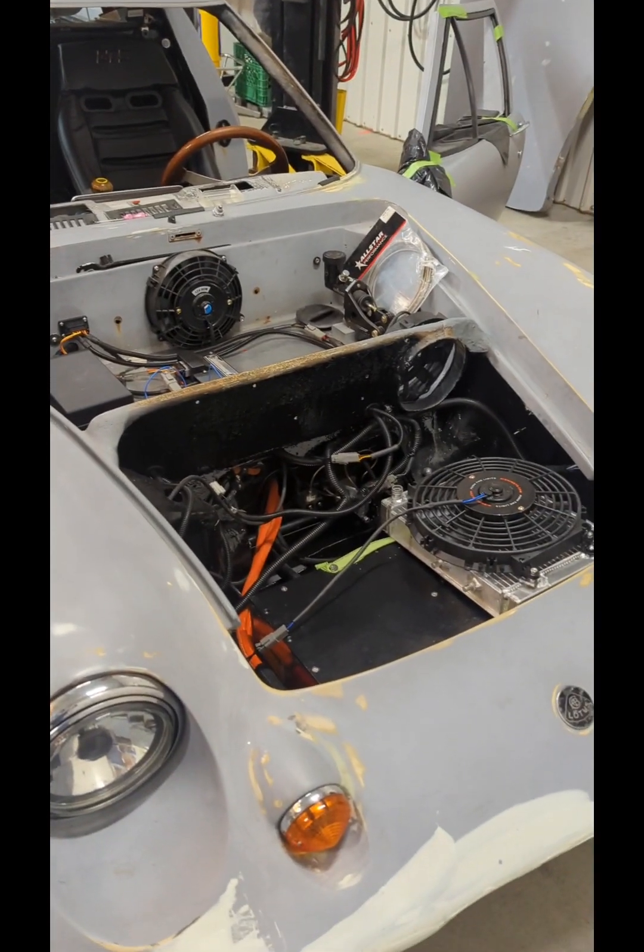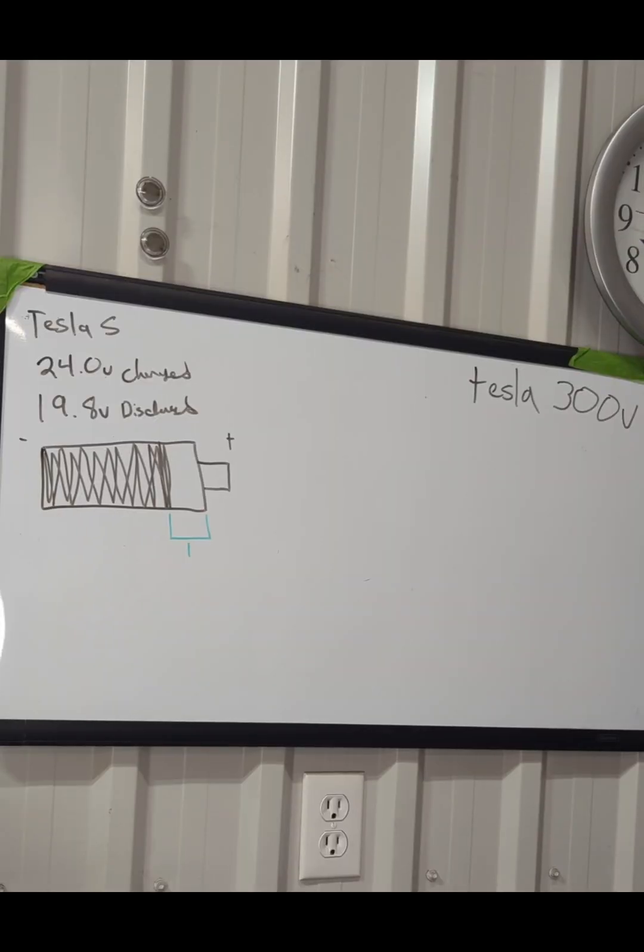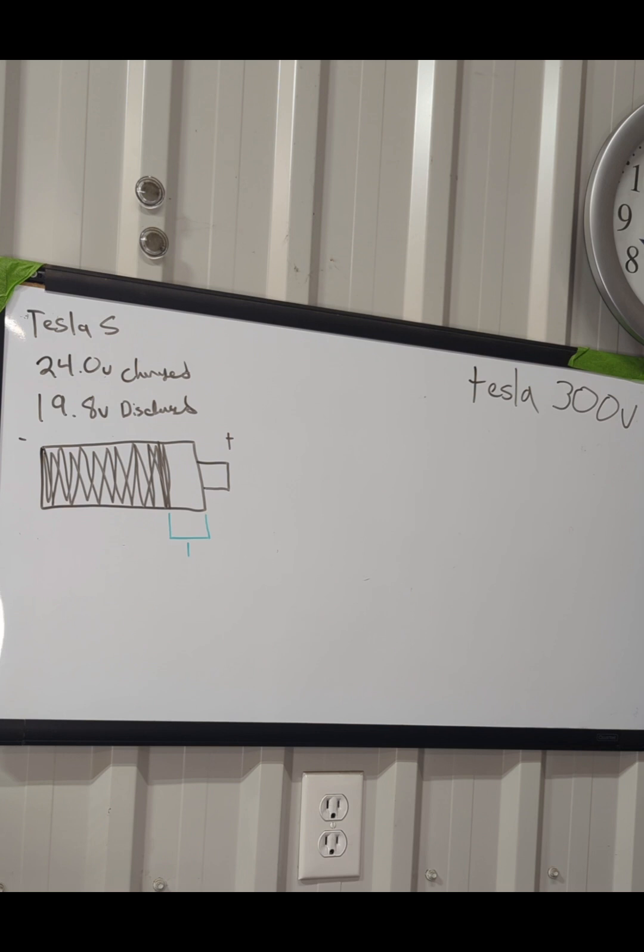The next question you got to ask yourself when you're doing an electric car is: where do I start, what do I pick, what motor do I use, what's the process? There's a lot of different batteries out there that you can choose from, and what I ended up choosing was a Tesla Model S battery cell.